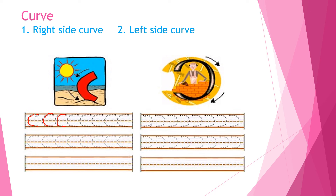Now moving to left side curve. Starting from the top red line, make a curve and come down to the 2nd blue line. We start from the topmost red line, make a round, and trace down to the 2nd blue line. Okay children, do you understand? So there are two types of curve: right side curve and left side curve.